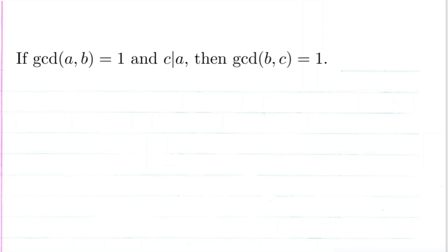Okay, so now we're going to prove question 20B in Burton's number theory book, which states that if the GCD of a and b is equal to 1 and c divides a, then the GCD of b and c is equal to 1.